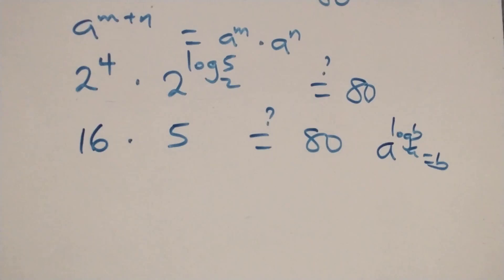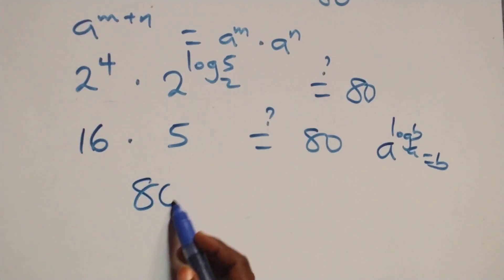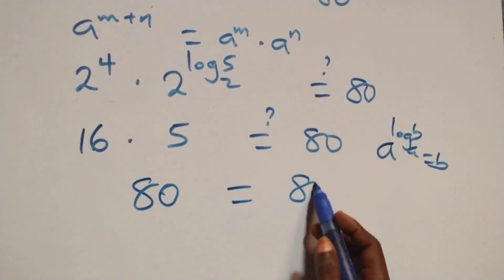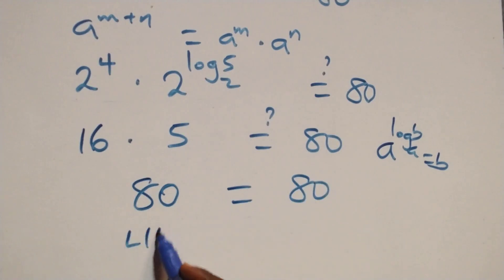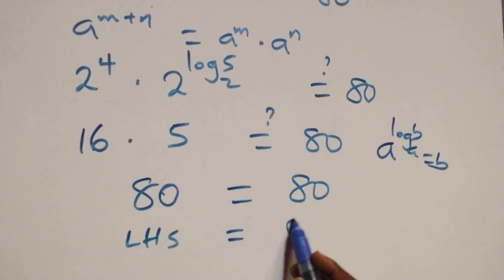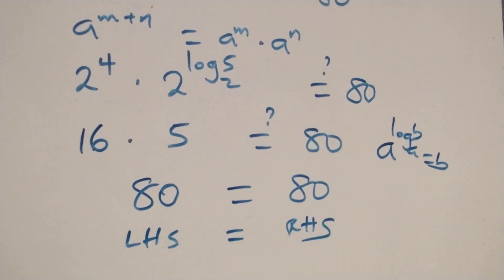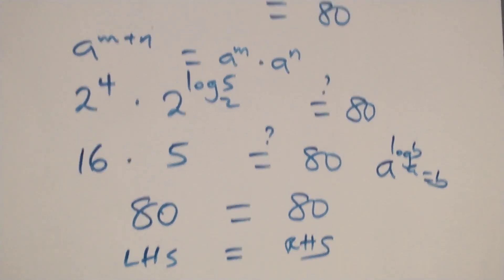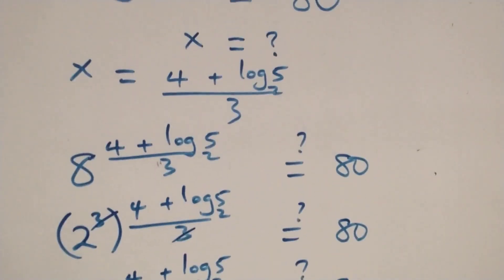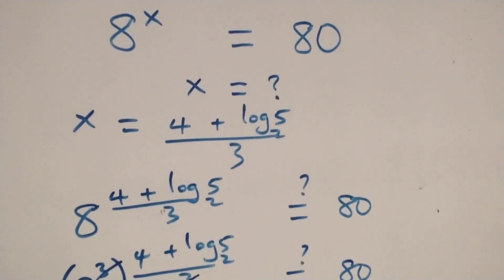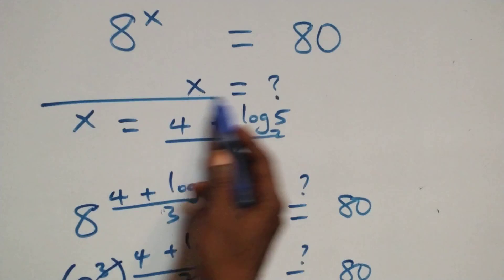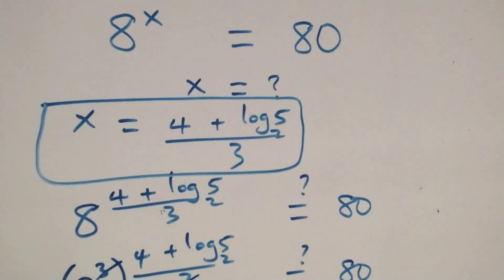16 times 5 is of course 80, which equals 80 on the right-hand side. Left-hand side equals right-hand side. Therefore we conclude that x equals (4 plus log₂5) all over 3 satisfies this given problem. Thank you for watching.